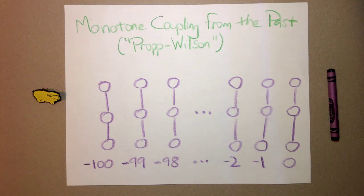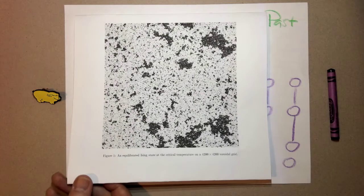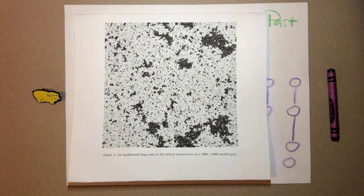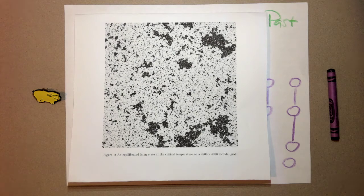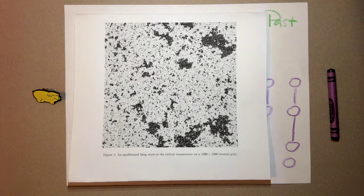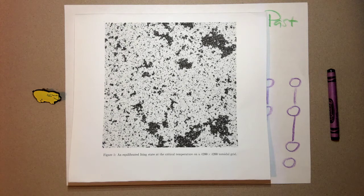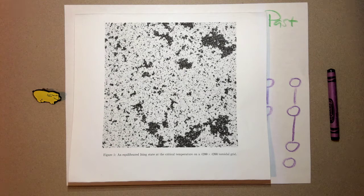Let me show you the sorts of things you can do with coupling from the past. Here is a picture created by David Wilson of an equilibrated Ising model state at a critical temperature on a rather large grid. This picture, when it was created in the 1990s, was sensational because nobody had been able to get really good samples exactly satisfying the requirements of the critical state of the Ising model on such a large grid. The way to do it was to use coupling from the past.